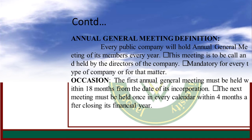Annual General Meeting: Every public company will hold an annual general meeting of its members every year. This meeting is to be called and held by the directors of a company and is mandatory for every type of company. The first annual general meeting must be held within 18 months from the date of incorporation. The next meeting must be held once in every calendar year within four months after closing of the financial year.